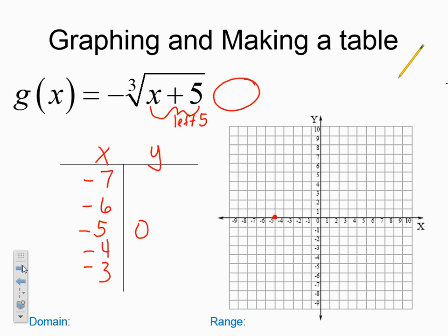And be careful when you type it in your calculator. Negative cube root, negative 7 plus 5 inside the root sign. So that would be the same thing as the negative cube root of negative 2. So I'm going to go ahead and do this calculation. And we get 1.25 or 1.26.